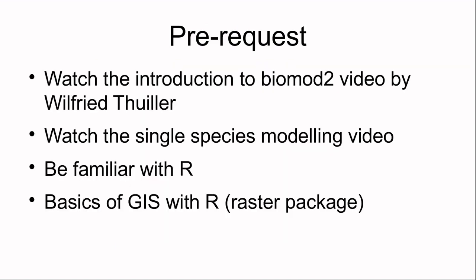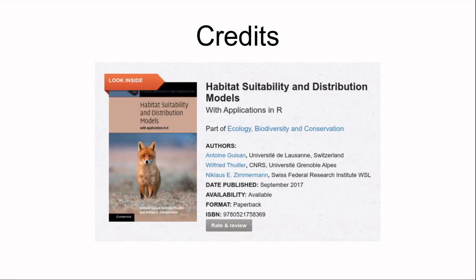Let's now implement the single species modeling wrapper. This wrapper, or function, will apply to every single species all the Biomod 2 workflow — that is to say formatting, defining model options, running individual and ensemble models, and then doing the projection. In this example, our wrapper is called Biomod2Wrapper and takes a species name as input.